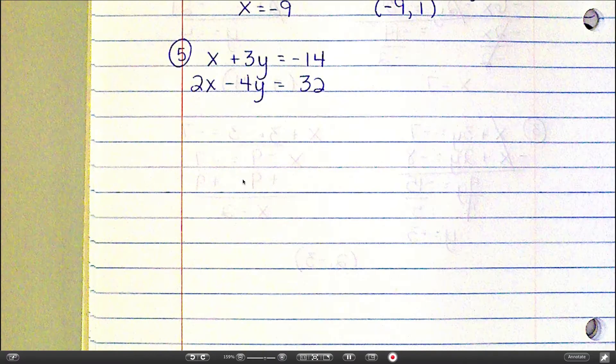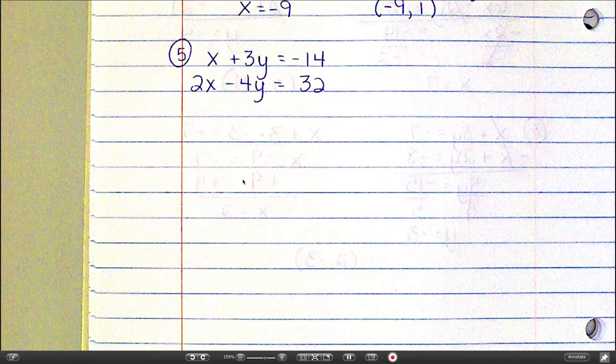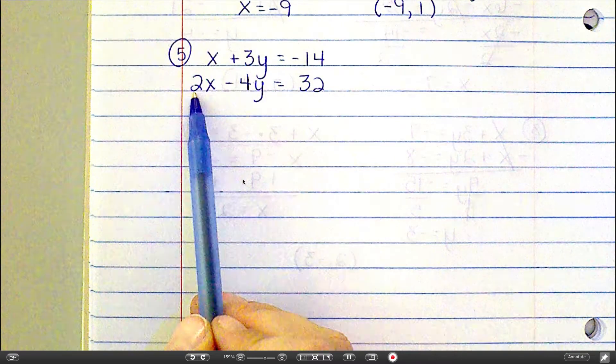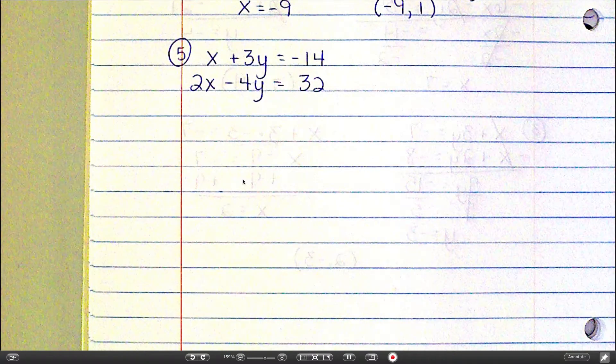So I need to make something cancel out. And I can make the x's or the y's cancel, but looking at this, it's much easier to turn a 1 into a 2 than it is to turn a 3 into a 4.